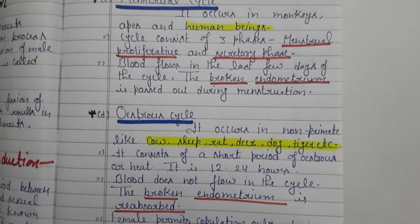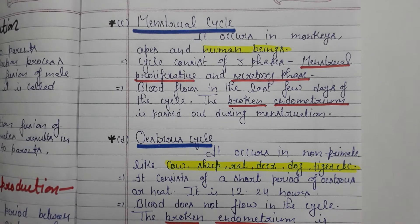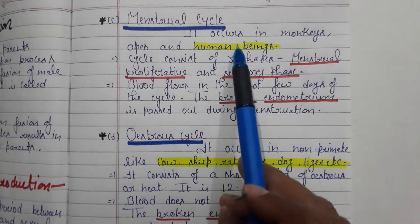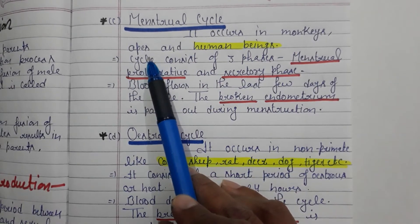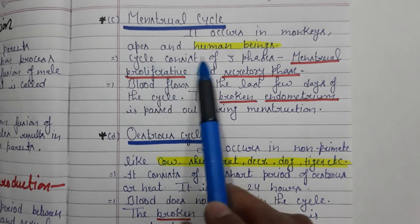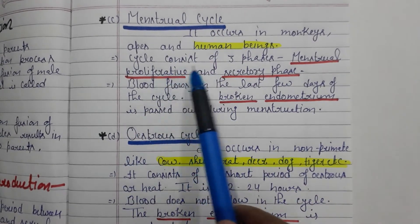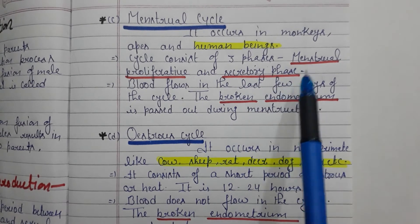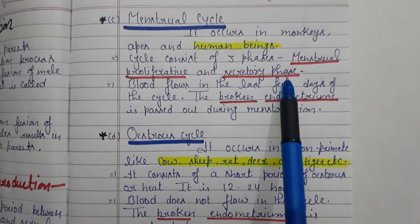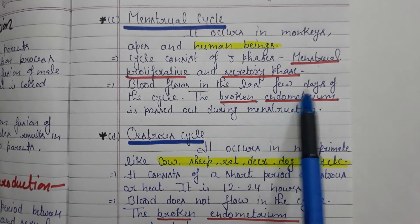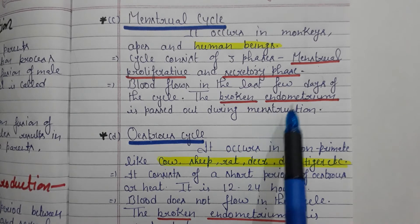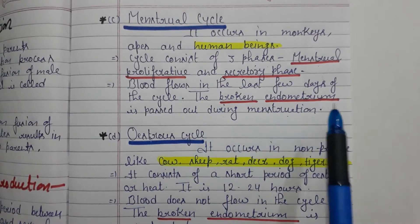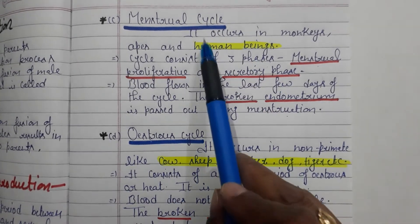The next is the menstrual cycle. First you studied the juvenile phase, second the reproductive phase. Now what is the menstrual cycle? It occurs in monkeys, apes, chimpanzees, and human beings. The cycle consists of three phases: menstrual, proliferative, and secretory phase.